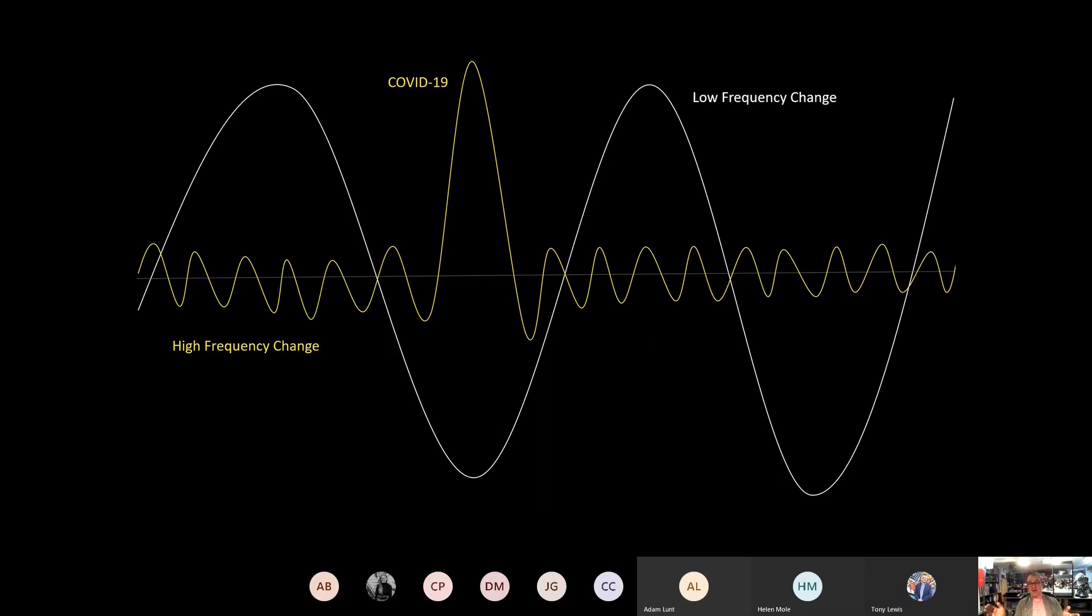These high frequency but high impact events, high amplitude events like COVID-19, which absolutely touch everybody's lives, are cross-cultural, cross-industry disruptions. But they're very rare that we see something like that that appears on a near horizon, disrupts absolutely everything and goes away again.